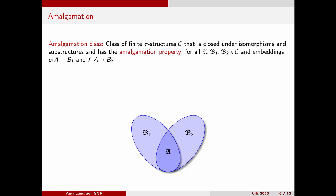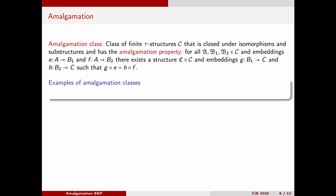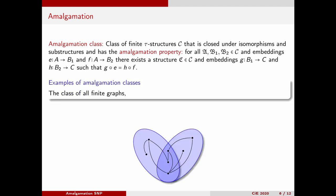If B1 and B2 are structures in the class and A embeds into both B1 and B2, then there must exist a structure C in the class — called the amalgam — such that both B1 and B2 embed into C and such that the corresponding embedding diagram commutes. In our pictures, we draw A as the intersection of B1 and B2, which is without loss of generality because the class is isomorphism closed. An example of an amalgamation class is the class of all finite graphs. This class is closed under isomorphisms and sub-structures, and as amalgam we can take the union of the two graphs B1 and B2 over A.